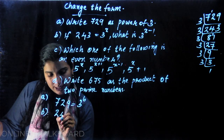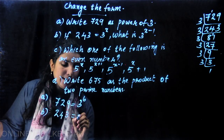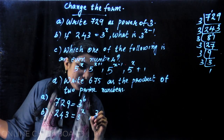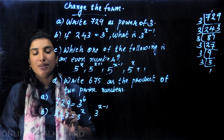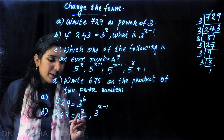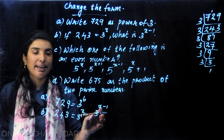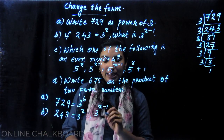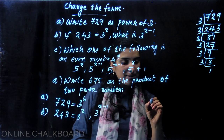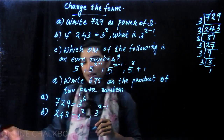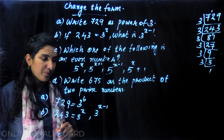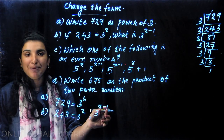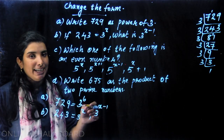Now let's ask Question B. If 243 is equal to 3 raise to x, then what is the value of 3 raise to x minus 1? What will we do? Let's say 3 raise to x minus 1. So what will we do in this case? If we have minus here, we'll change it using the division rule.